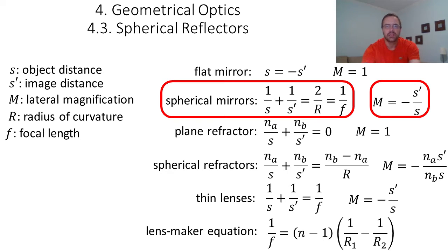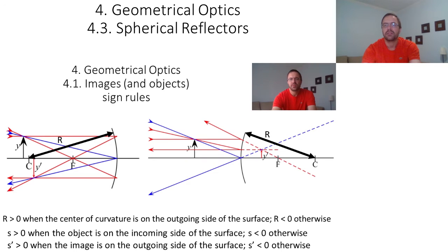In this relation, the focal length f of the mirror is simply given by the radius divided by 2. But keep in mind that we have a sign rule for r. r is positive when the center of curvature is on the outgoing side of the surface and negative otherwise. The focal length f will have the same sign as r since f is r/2.